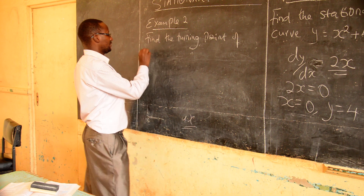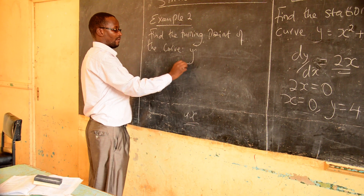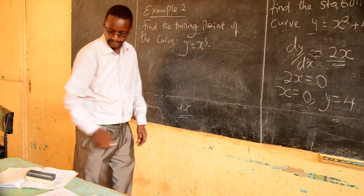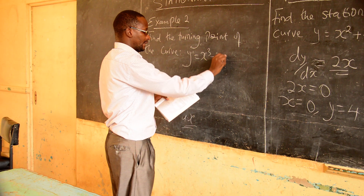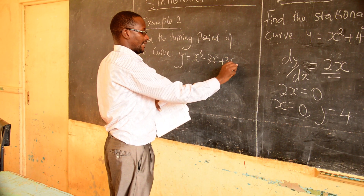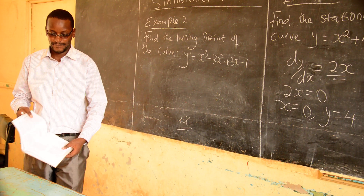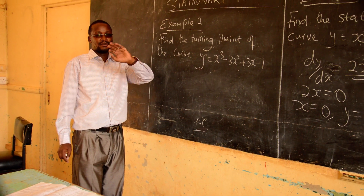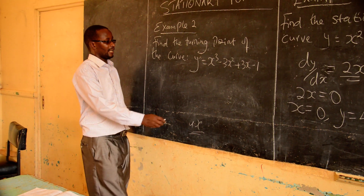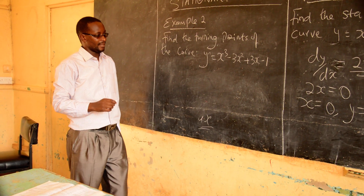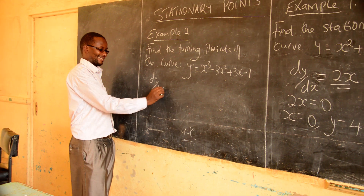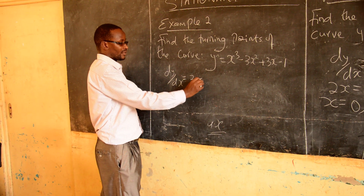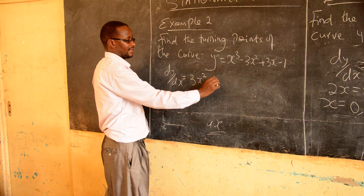Example 2: the curve y equals x cubed minus 3x squared plus 3x minus 1. You can try on your own as you pause the video, but I will just continue — try to get the turning points. There will be more than one. So the first thing: you differentiate to get dy over dx, which equals 3x squared minus 6x plus 3.